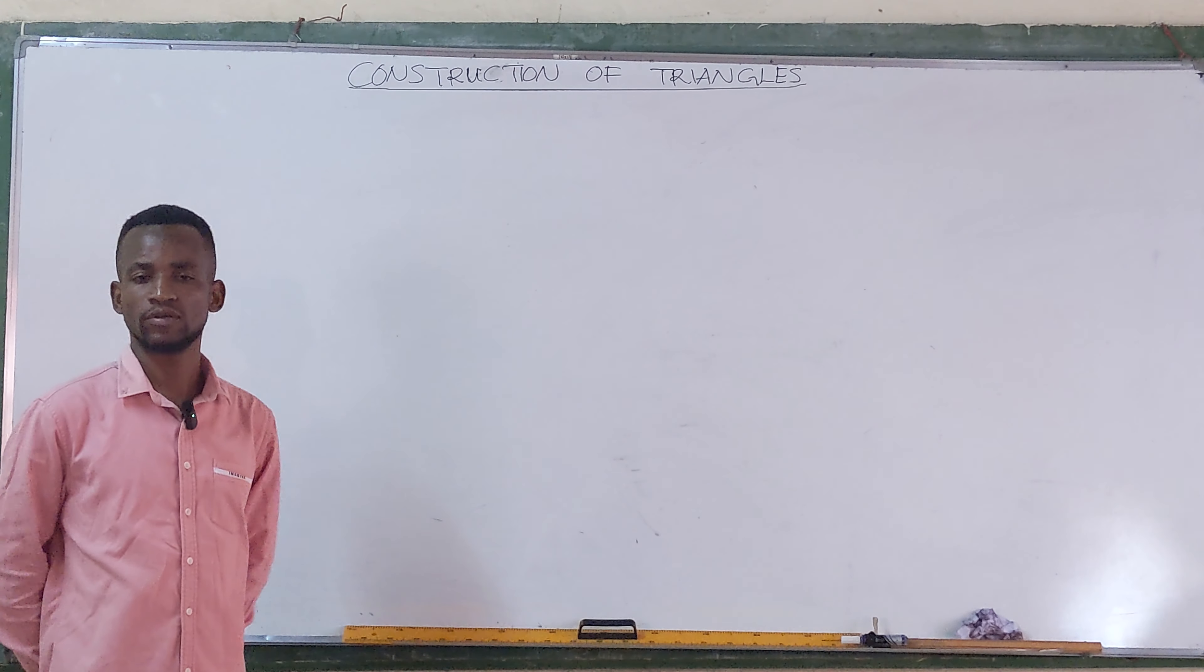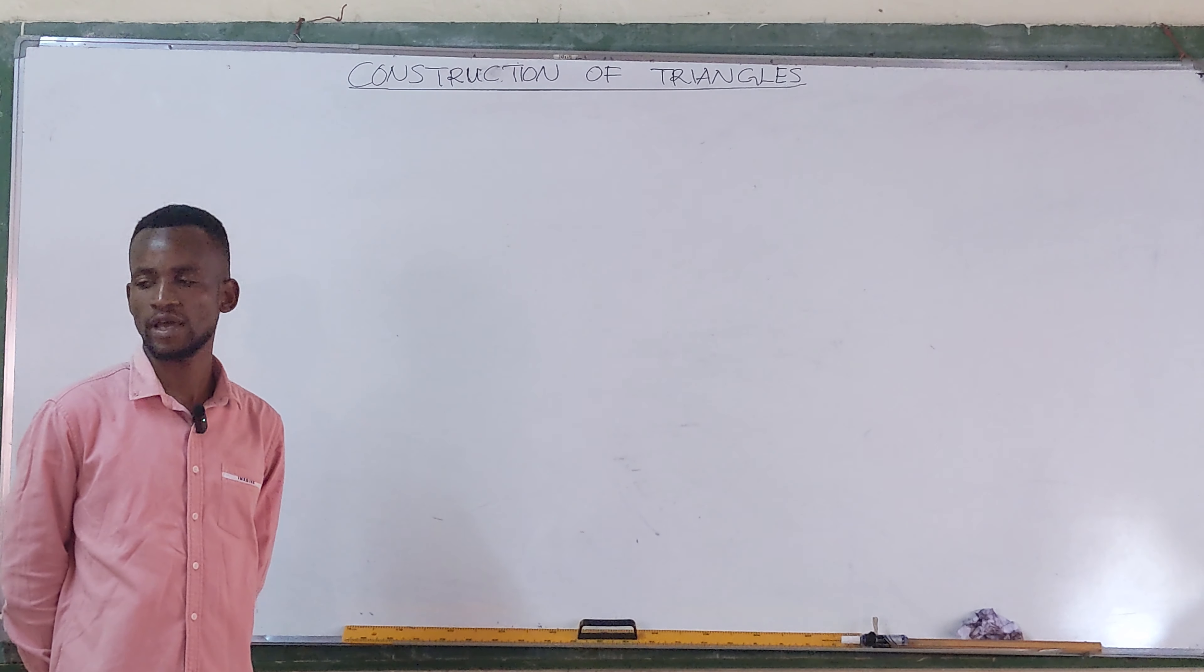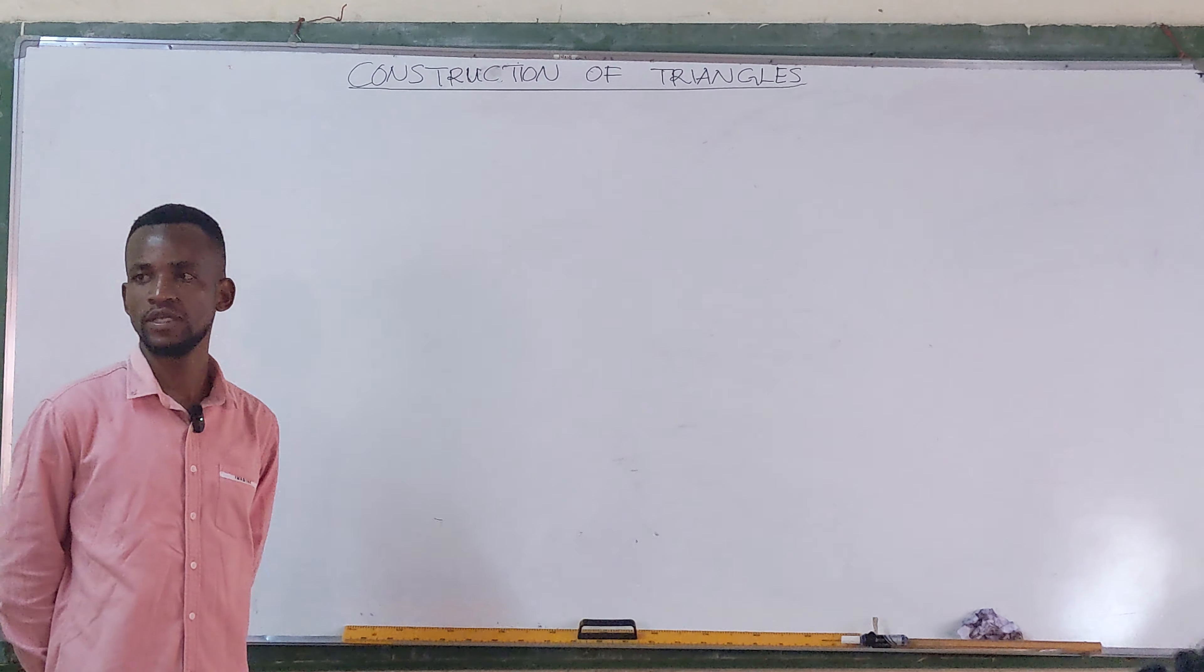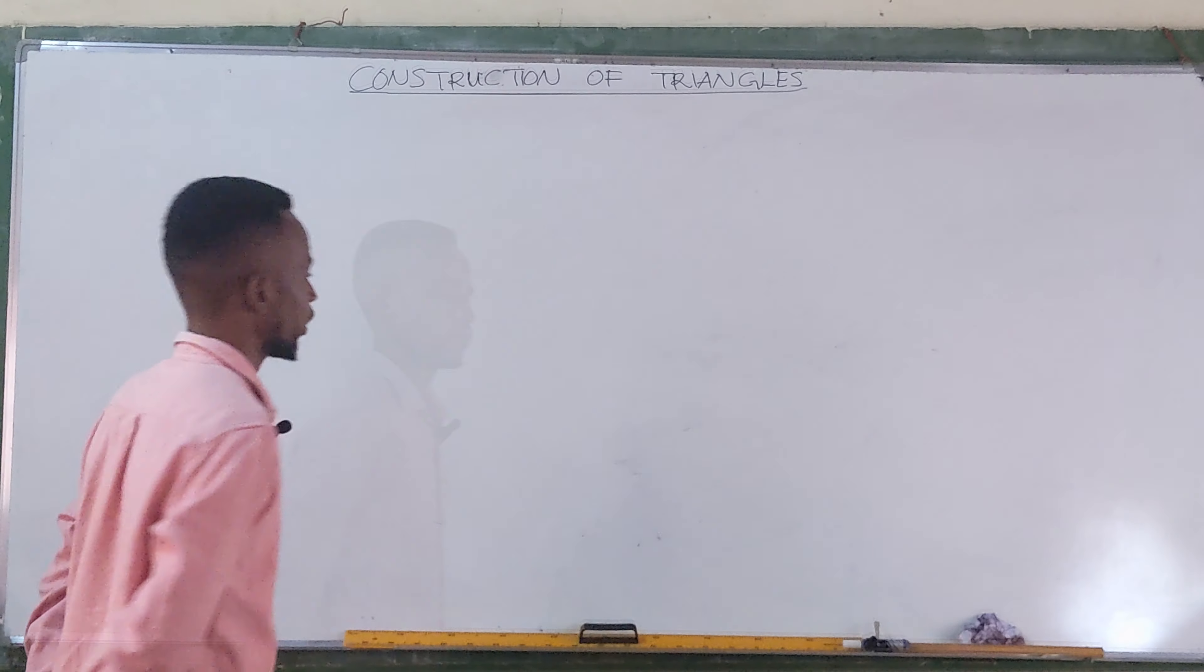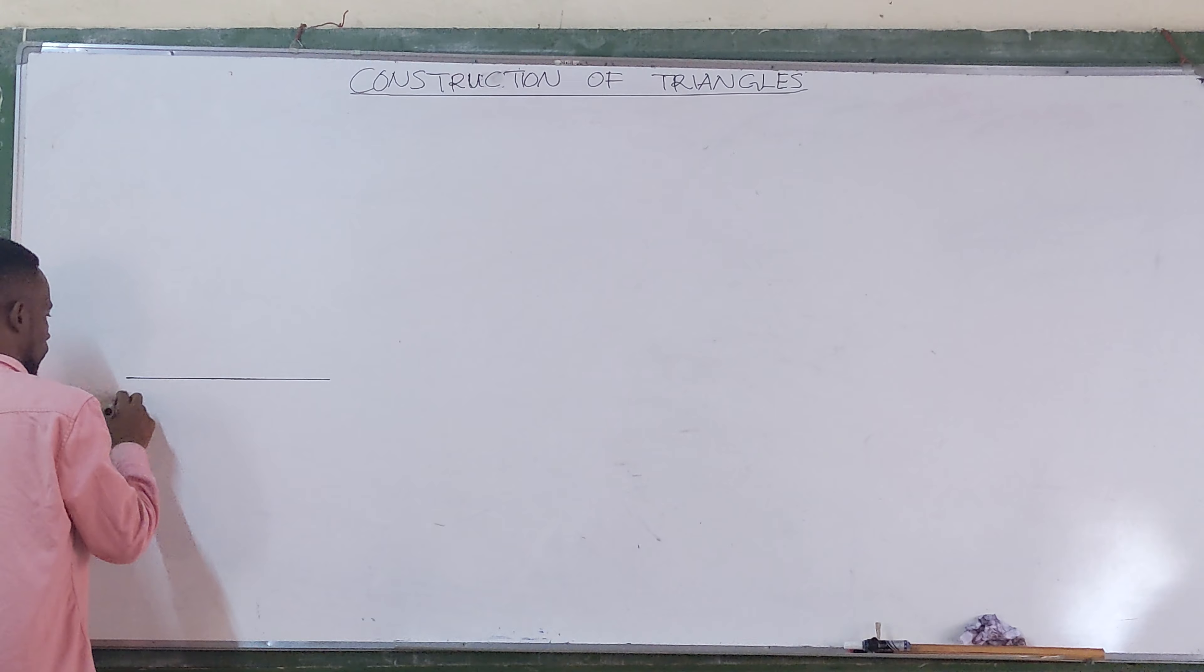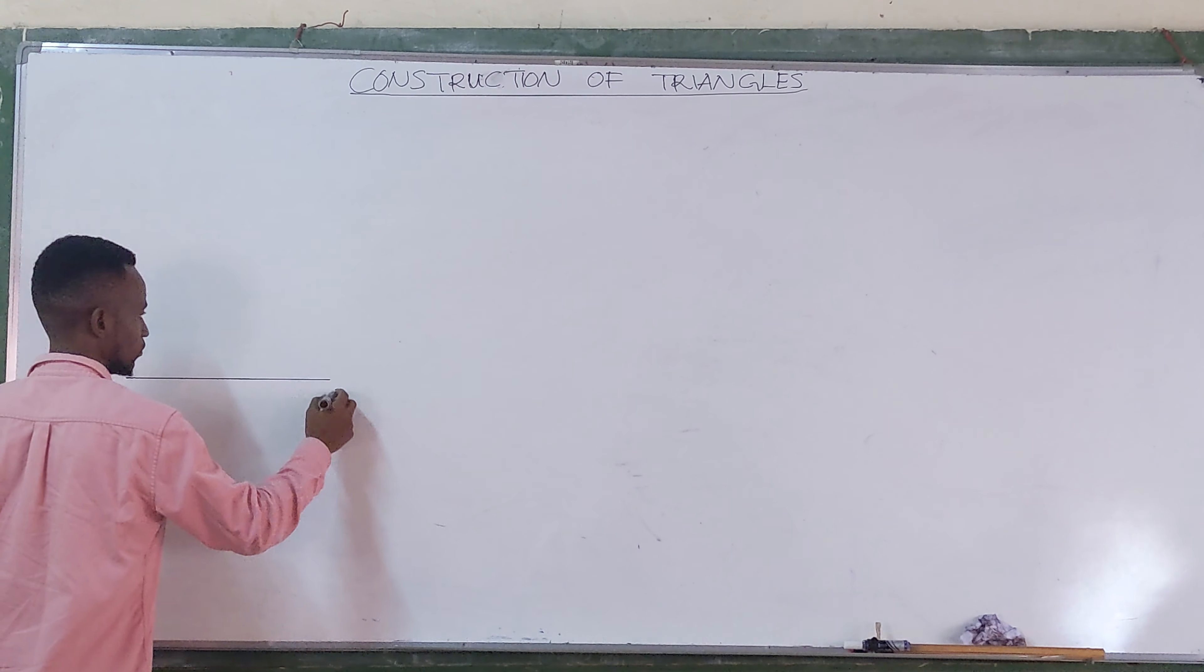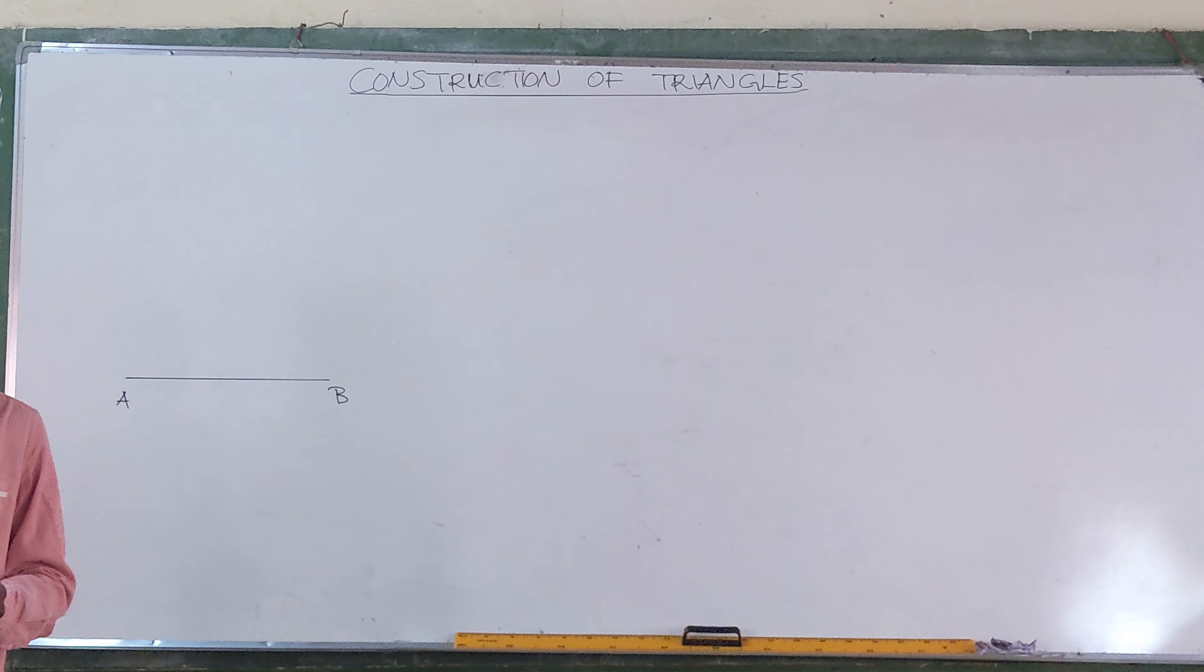To construct an equilateral triangle given the length of one side. And then you say AB equals 65 millimeters. Okay, so let's start with drawing line AB. AB 65 millimeters, is it there?